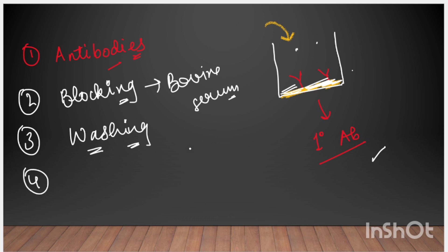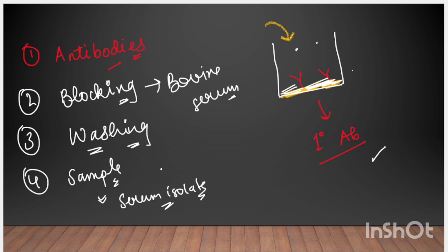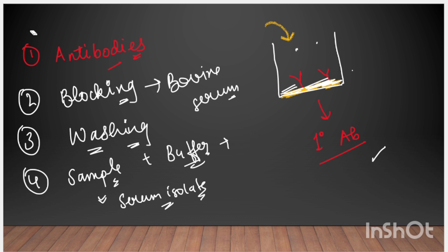Next, we will add the sample. How do we add the sample? Suppose we have to detect antigen in our blood. We will isolate serum from the blood and add it to the buffer — PBS (Phosphate Buffered Saline). So we use a buffer plus the isolated serum sample. The isolated serum in the buffer is our prepared sample.